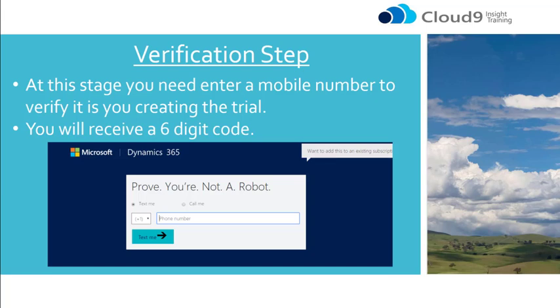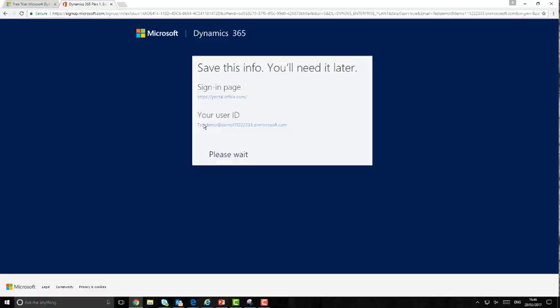This is the verification step where it asks you to put your phone number in, where it will either text you or call you with a six-digit code, which is used to verify that you are a real person taking this trial out. It will then give you a link where you can sign in to this trial and also your ID which you'll need to sign in.